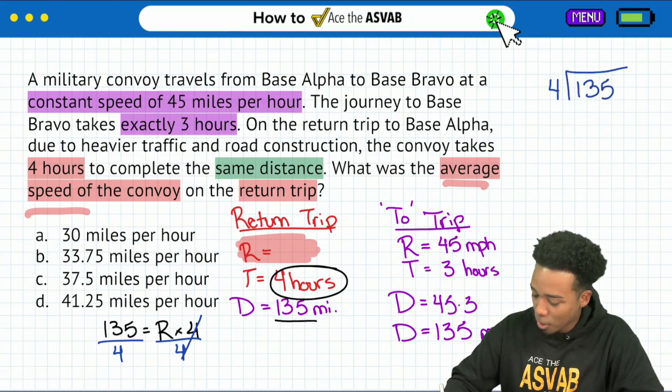And so they'll cancel out on the right side. Let's figure out what this is going to be right here. 135, four goes into 13 three times, and that's going to be 12 and drop to 5. So we have four going into 15, another three times.